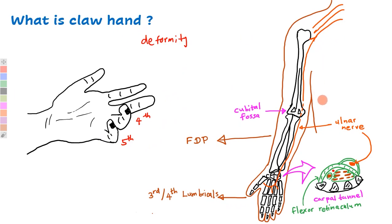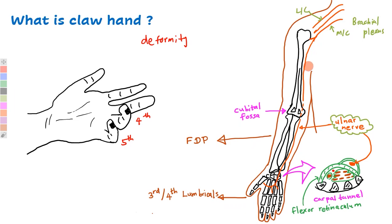To learn about claw hand, we should learn the pathway and distribution of the ulnar nerve. I have drawn this image to show you the distribution of the ulnar nerve. The ulnar nerve is a branch of the medial cord of the brachial plexus. It descends downward in the medial aspect of the arm, medial to the humerus. At the cubital fossa, it lies behind the medial epicondyle, so the ulnar nerve is not a content of the cubital fossa. It enters the forearm between the two heads of the flexor carpi ulnaris muscle, then comes to the hand by passing above the flexor retinaculum through a separate canal bounded by the palmar carpal ligament — so it is not a content of the carpal tunnel.